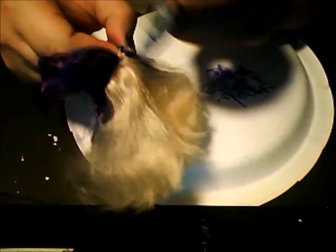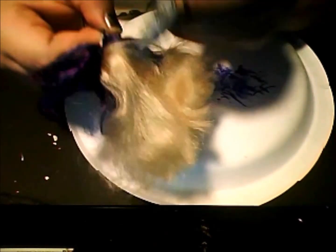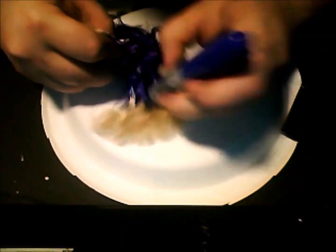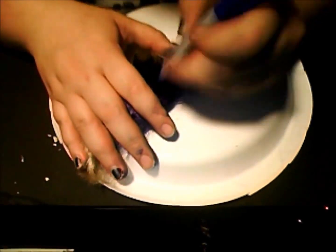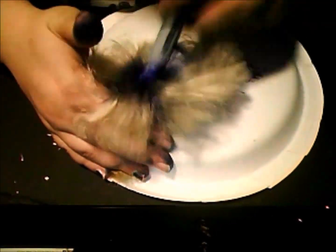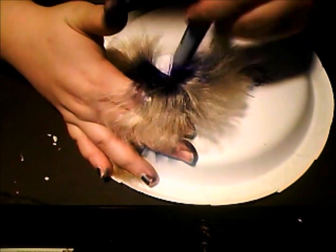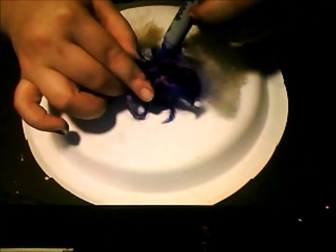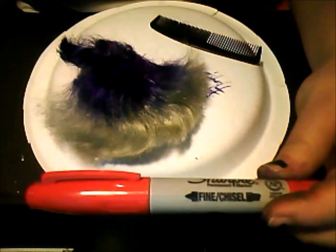Leave the ends blonde to later color them. Part the hair in half and color on. Done with the blue. Now for the red ends. Comb hair before you do red.